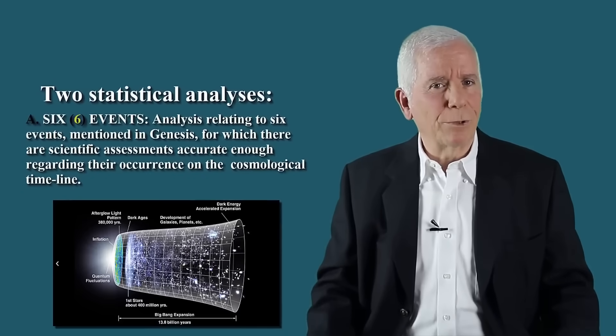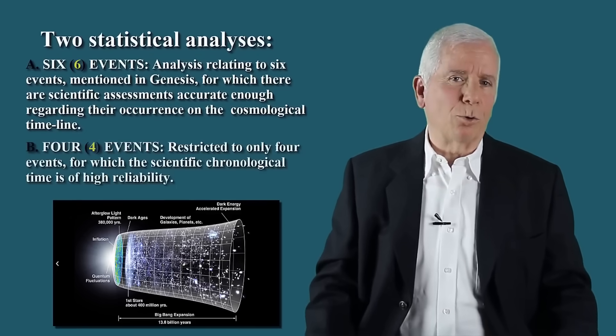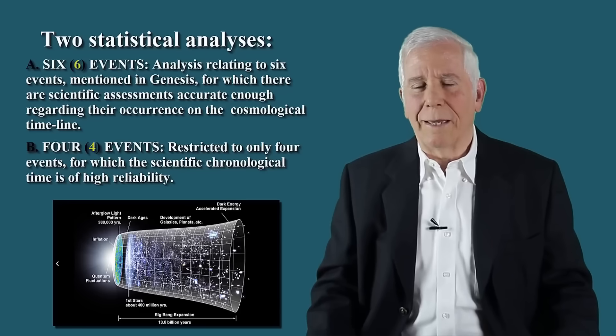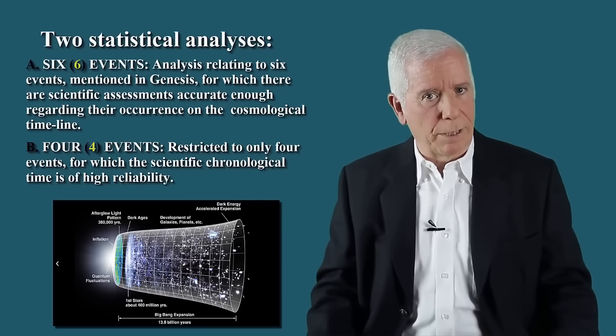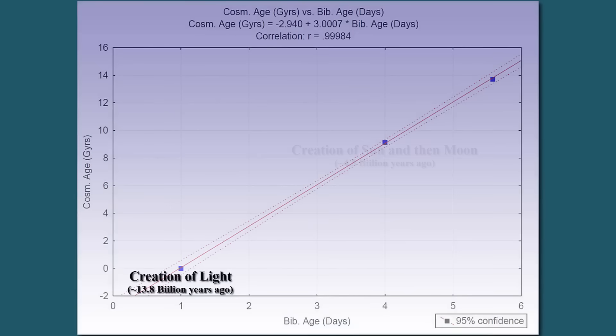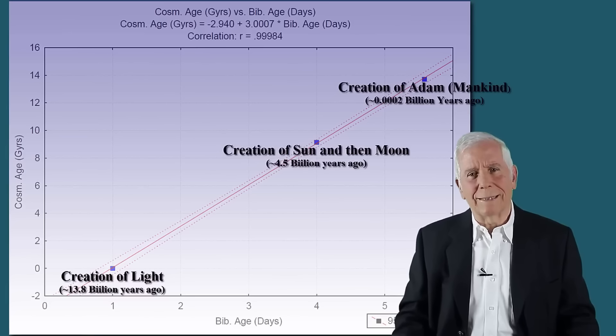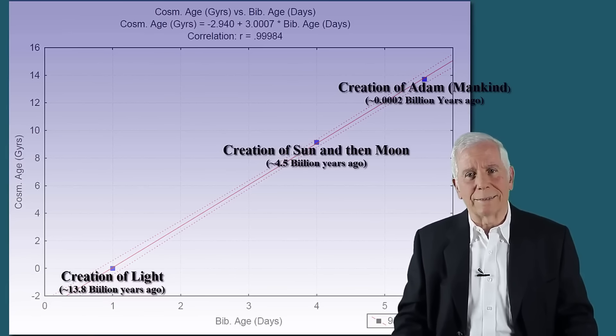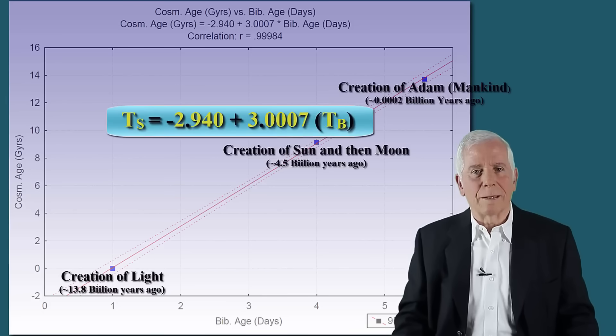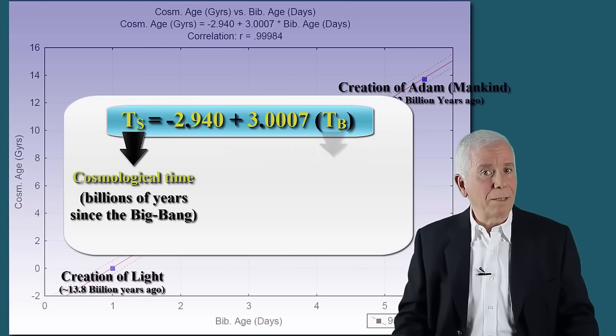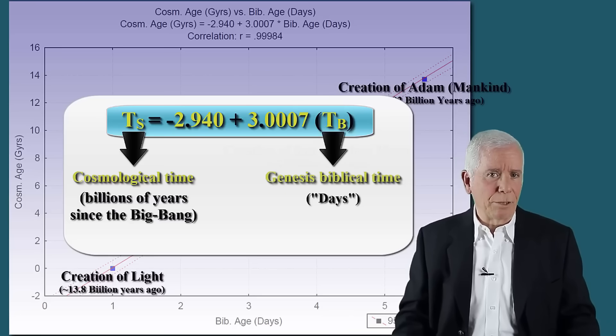We have performed an additional analysis restricted to only four events for which the scientific chronological time is of high reliability. A plot of these points is now displayed. Based on computerized statistical analysis employing linear regression, the equation obtained from this analysis is now shown. In this equation, TS is the scientific cosmological time in billions of years since the Big Bang, and TB is biblical time in days as described in Genesis.